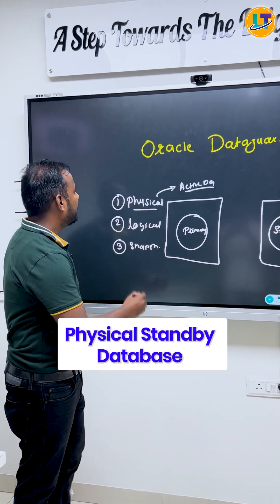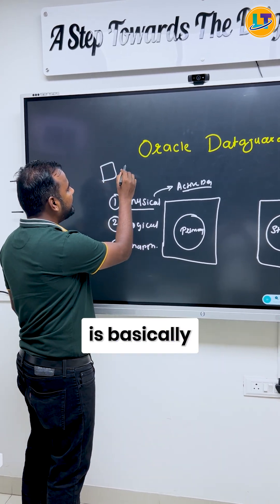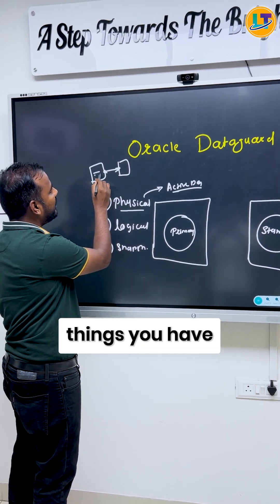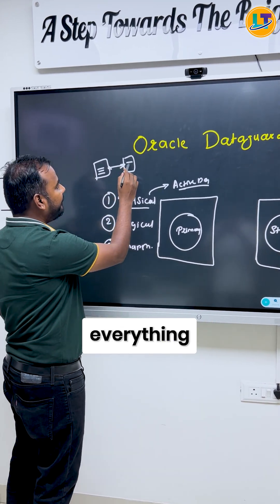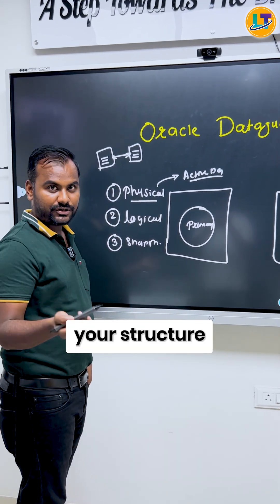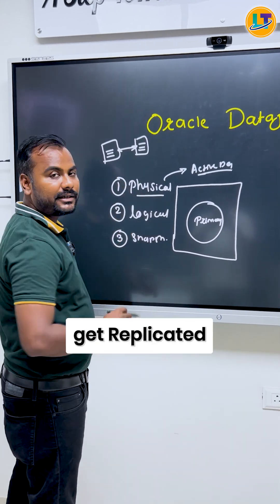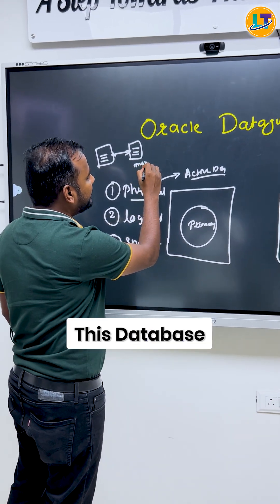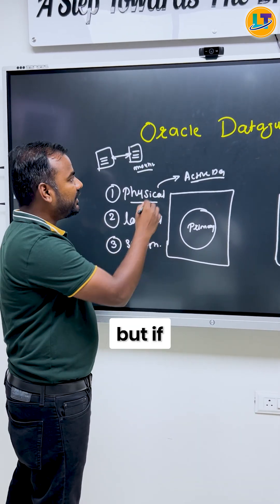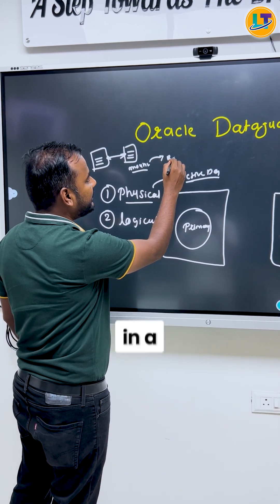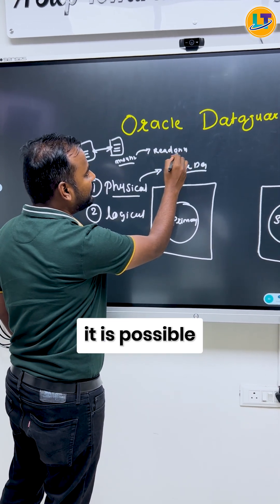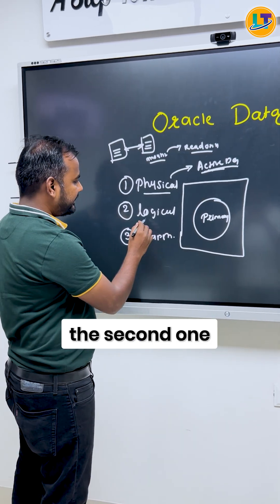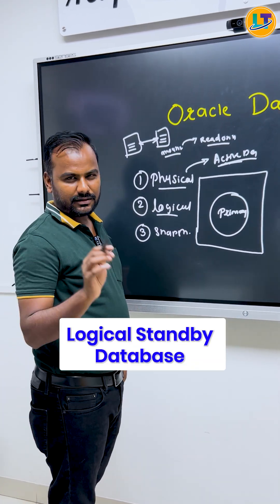The first one is the physical standby database. A physical standby database is basically a block-to-block copy — whatever is available on the primary, everything including the structure, gets replicated. This database can be in mount stage, but if you want to open it in read-only mode, that is possible, and we call it Active Data Guard.